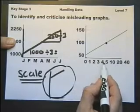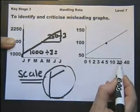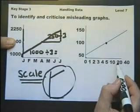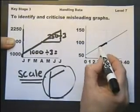One, two, three, four, five. And then it goes five. And then it goes a gap of 10. And then it goes a gap of 20. So here it's going up in ones, then it's going up in fives, then it's going up in tens, and then it's going up in twenties.